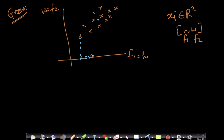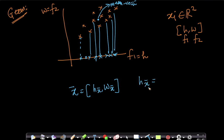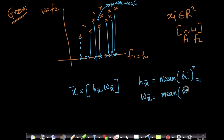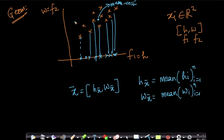If I project all these points onto the x-axis, I now have scalars — basically the heights of students. The first component (height) of the mean vector x̄ is simply the mean of all heights hᵢ for i from 1 to n. Similarly, the weight component of x̄ is the mean of all weights wᵢ for i from 1 to n. Because the sum is component-wise: if I sum all of them and take the mean, I get the mean vector component-wise.